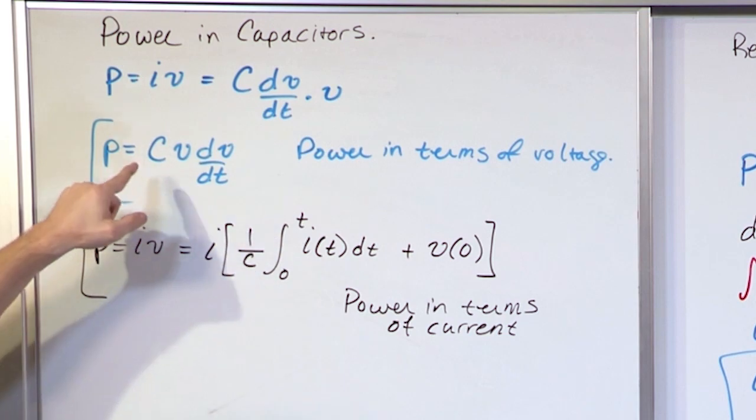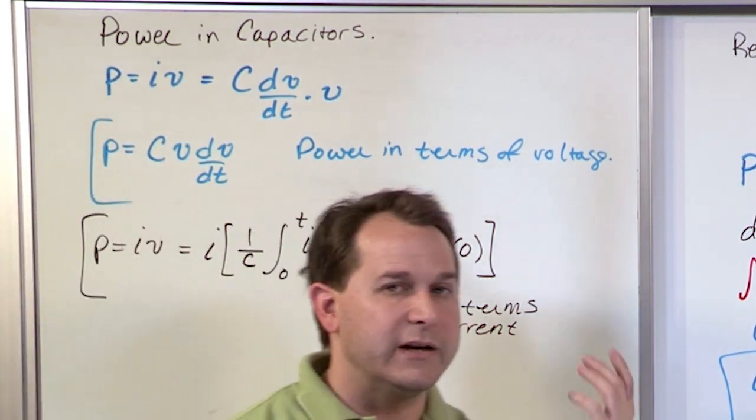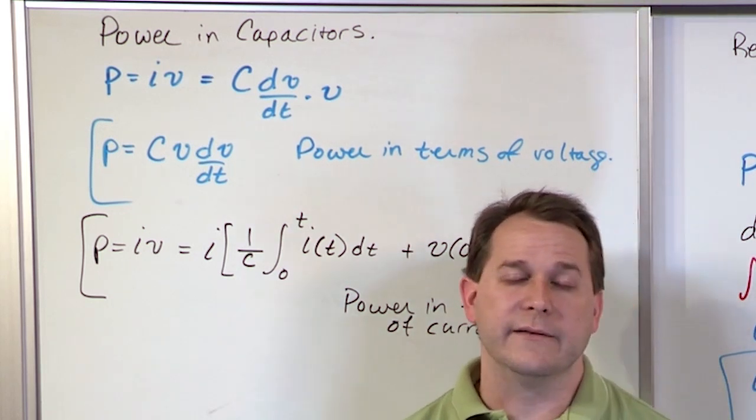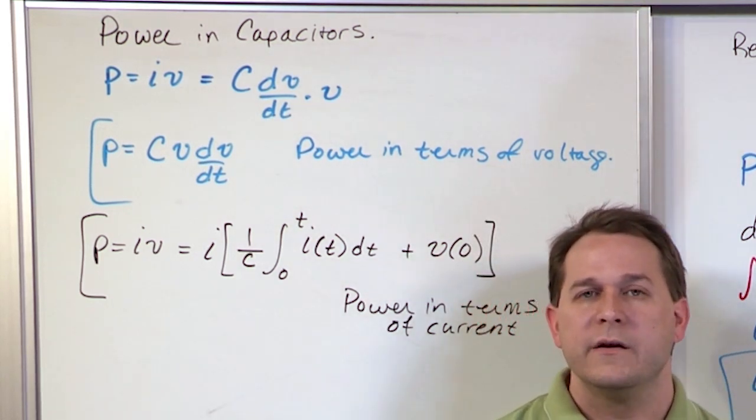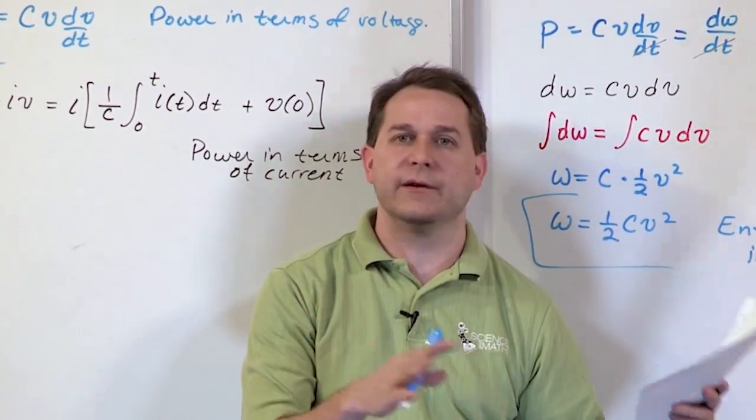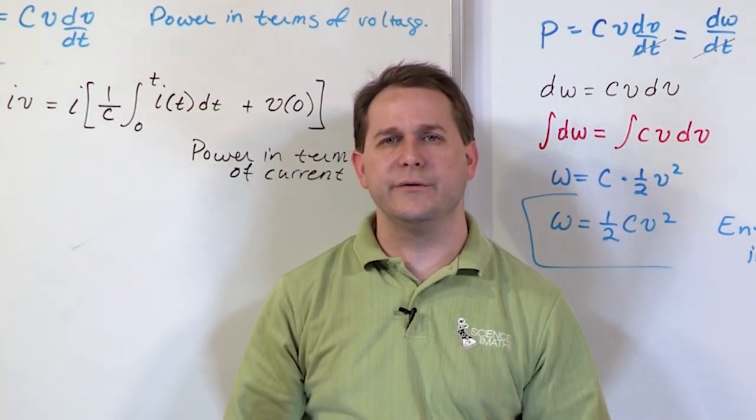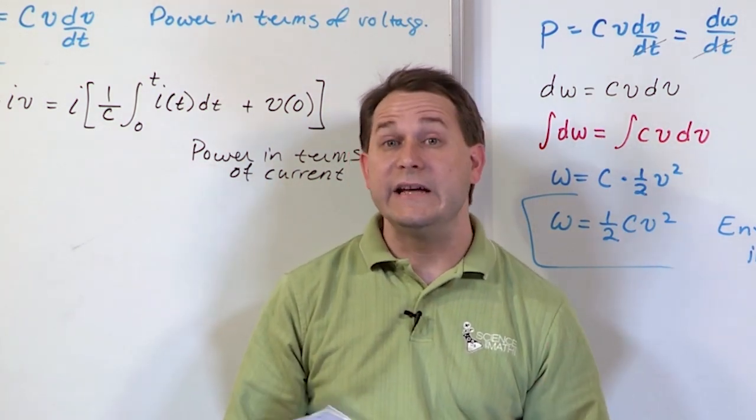But it ultimately has exactly the same form. And notice that this power relation, C V dV dt, and also this integral here, if you go back and look, is exactly the same form as it was for an inductor as well. So you can again think of them as peanut butter and jelly. One deals with magnetic fields, one deals with electric fields. Those characteristics are going to be used over and over again in circuits.